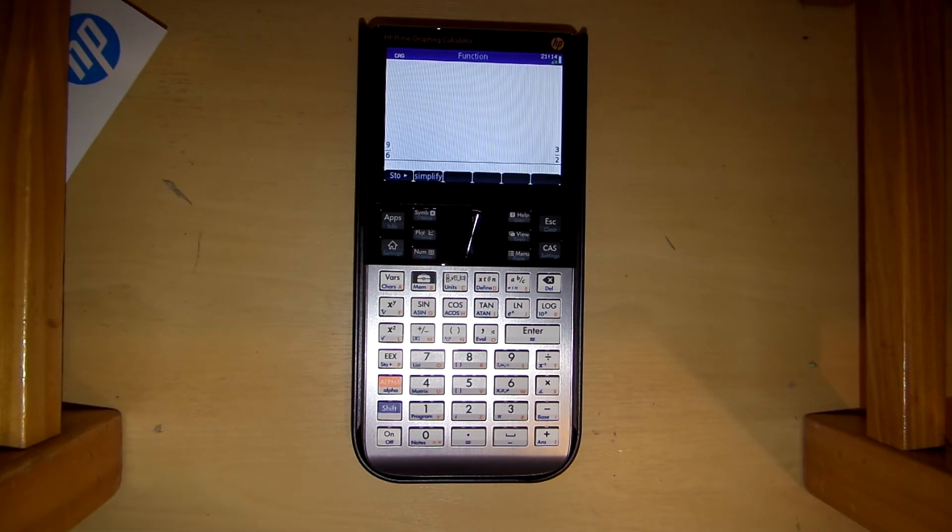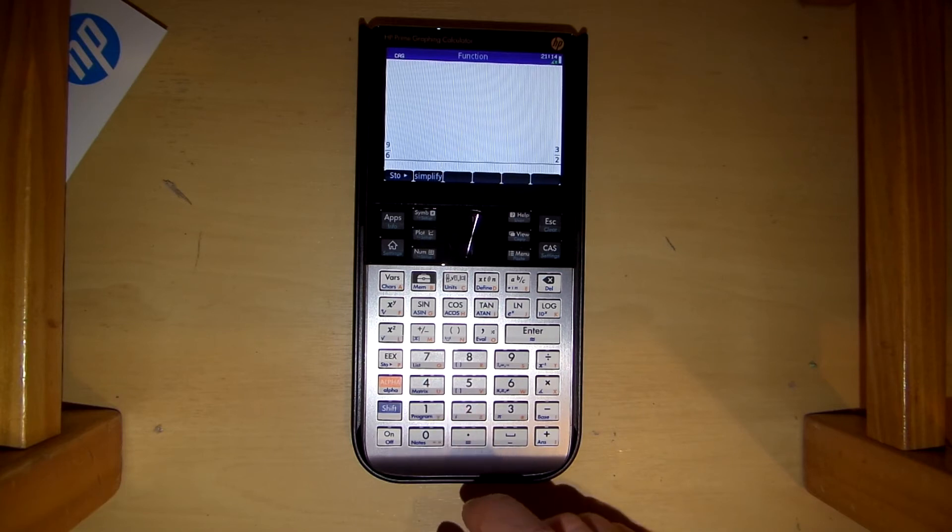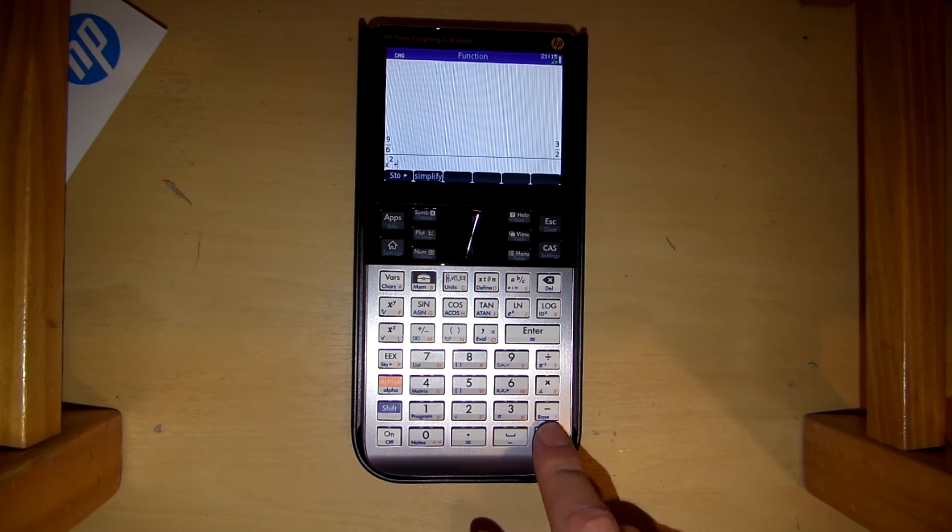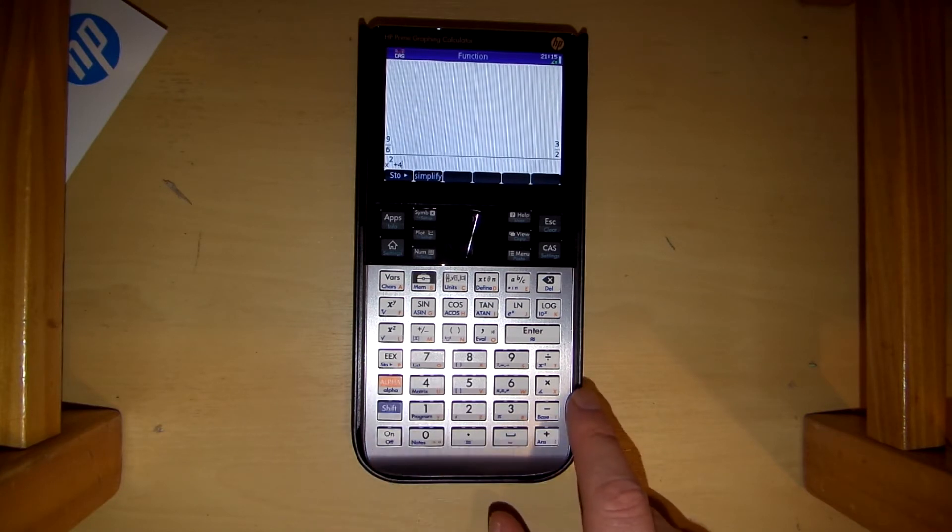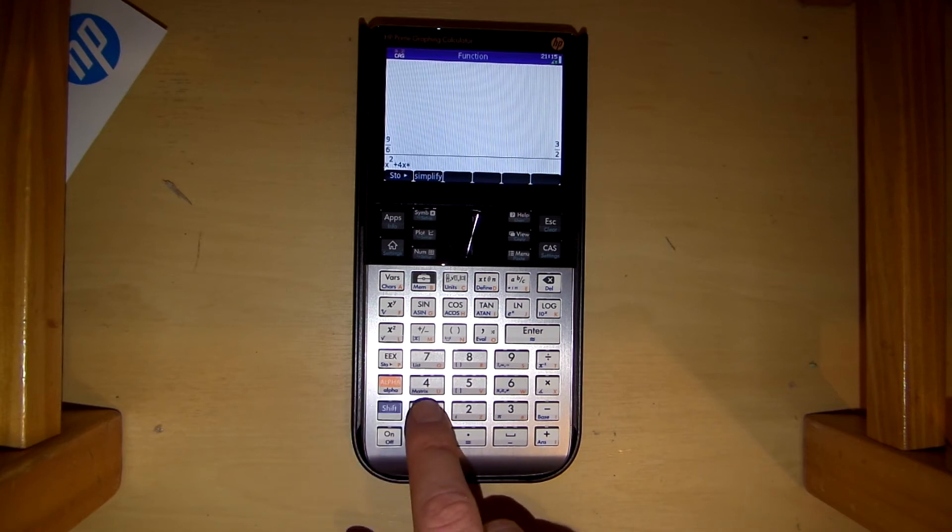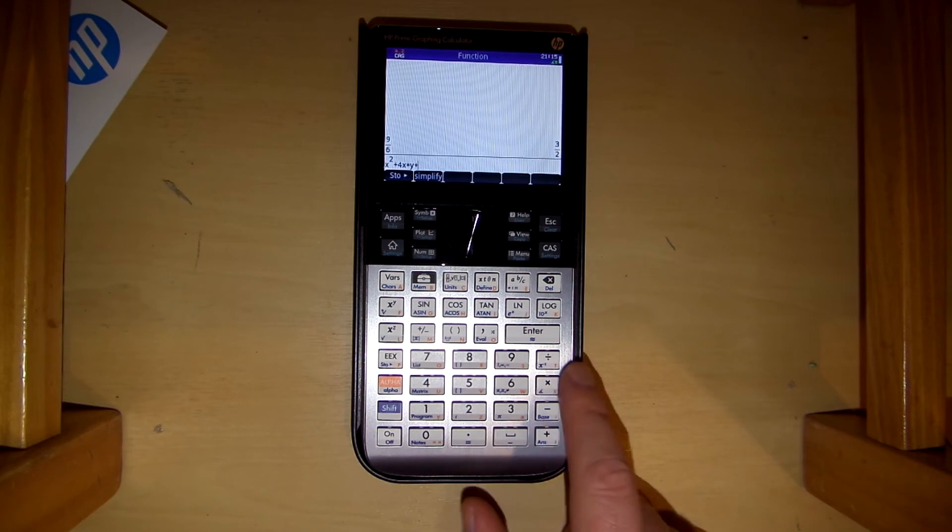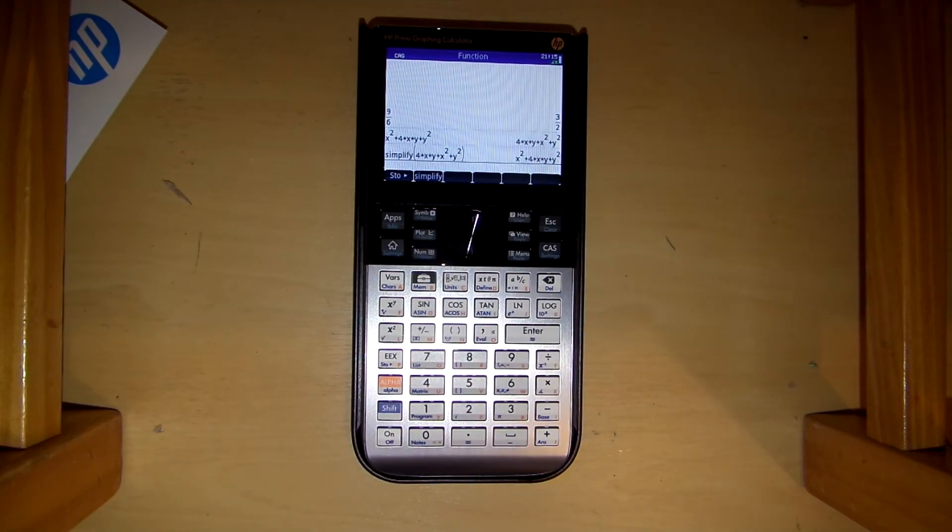There's some other nice features in CAS. For example if I want to do something like a very simple, let's just do a very simple formula. If I do like so. So x squared plus 4 x times y. You must do the times. You can't do implicit multiplication. It doesn't like it. I've done this before in the emulator. Plus let's just do y squared. Enter. Simplify. Oh that is simplify. That's hilarious.